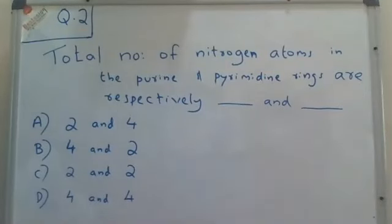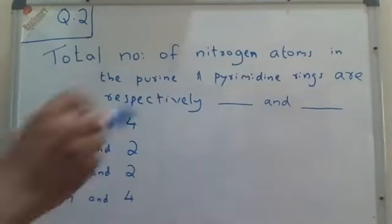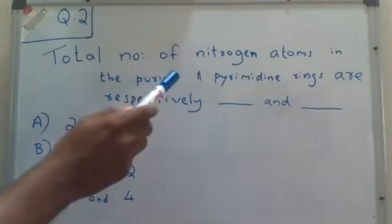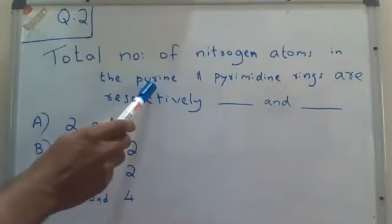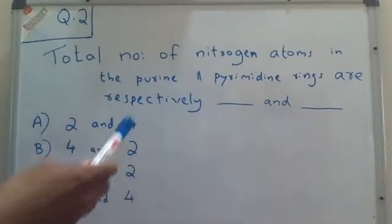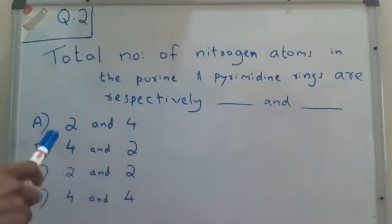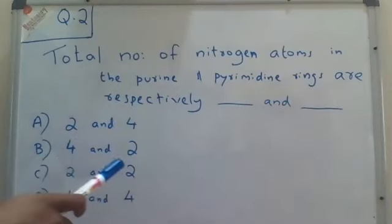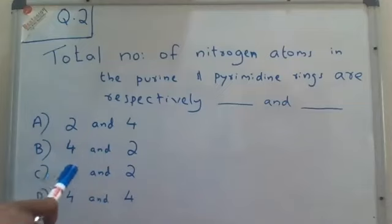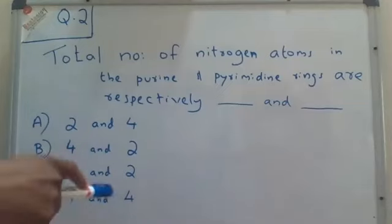Hello all. Welcome back to the question answer discussion. The question for you is: the total number of nitrogen atoms present in the purine and pyrimidine rings are respectively — A choice 2 and 4, B choice 4 and 2, C choice 2 and 2, D choice 4 and 4.